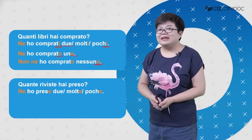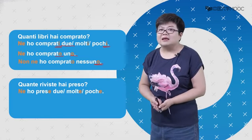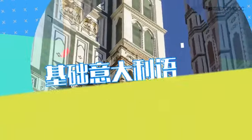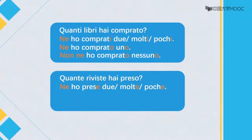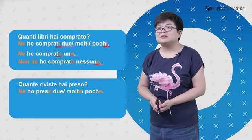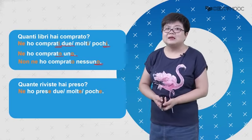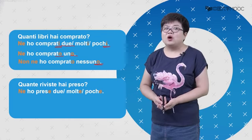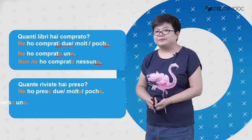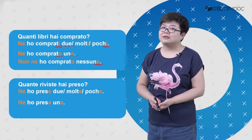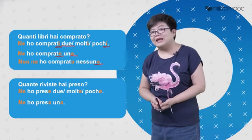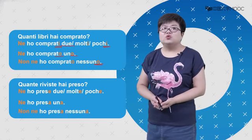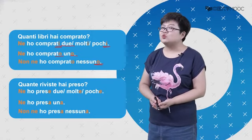Quante riviste hai preso? 你买了几本杂志？Due riviste是阴性复数的概念：Ne ho comprate due. 如果买了好多：Ne ho comprate molte. 买了几本不太多：Ne ho comprate poche. 如果只买了一本，这个时候要用阴性单数：Ne ho comprata una. 一本都没买：Non ne ho comprata nessuna. 那么，直接宾语代词我们就看到这里。Grazie per l'attenzione, arrivederci!